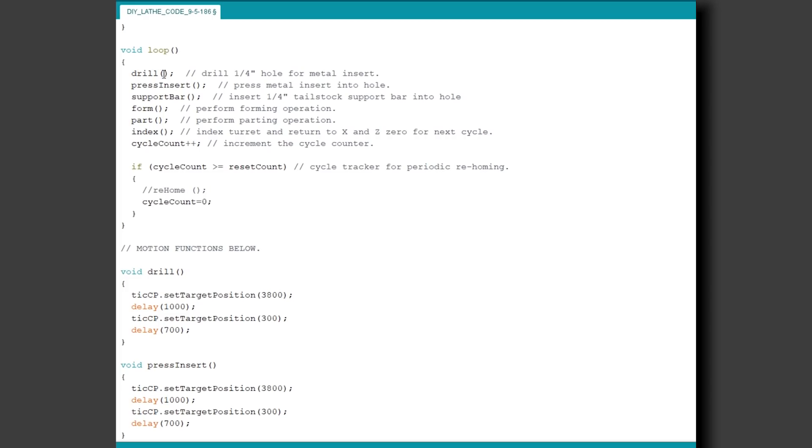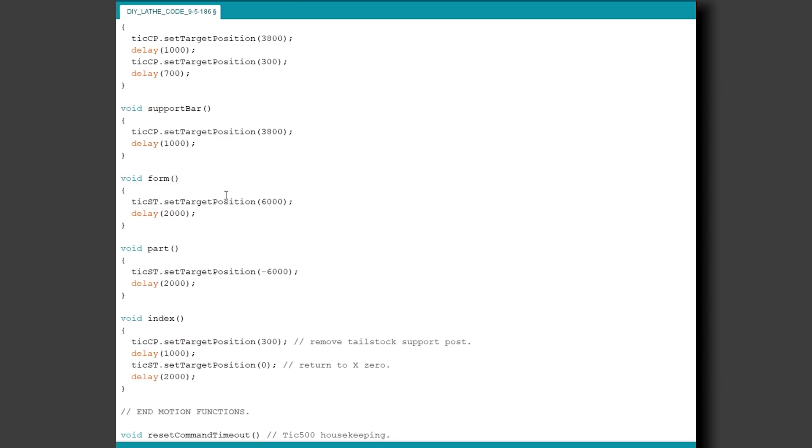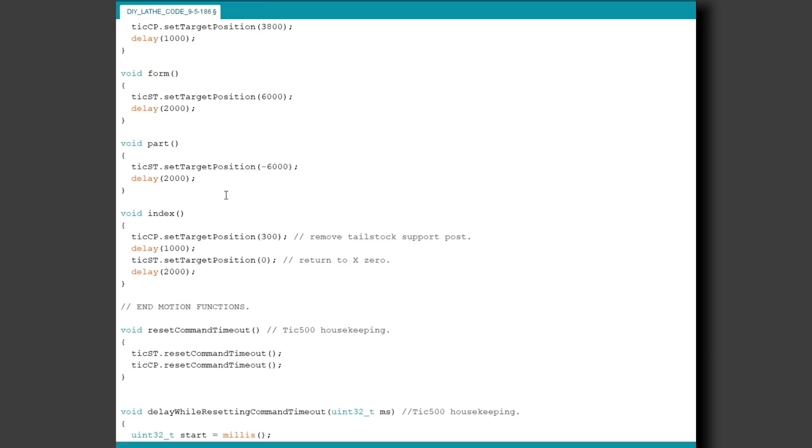Below that we have these actual motion functions, setting either the clear path or stepper tick to a target position, giving it some time to reach that position and do its thing, then returning to the home position and delaying again before performing the next function. And out at the bottom we just have more tick housekeeping. And that's all there is to it.